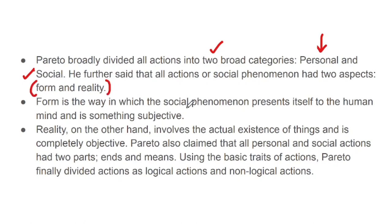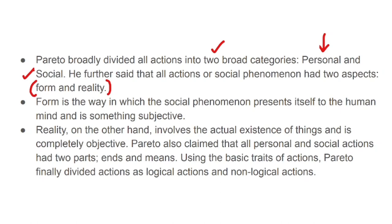All actions we do, all social phenomena, present themselves to the human mind and are something subjective. When we look at or think about the characteristics of something, those characteristics form a picture in our mind — that is the 'form.' For example, if someone thinks orange is a fruit and another thinks orange is a color — that is the form. Reality is what we observe as it actually is.